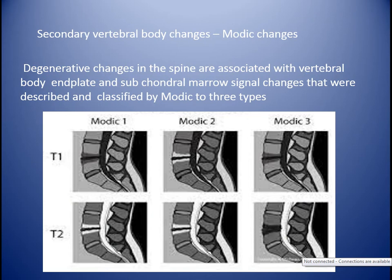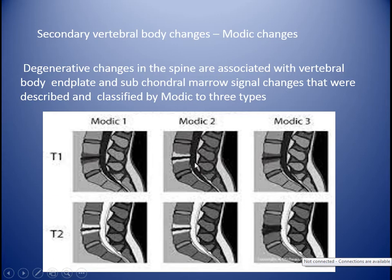Modic changes are degenerative changes in the spine associated with vertebral body end plate and subchondral marrow signal changes, classified by Modic into three types. Type 1: hypointense on T1, hyperintense on T2, indicating inflammatory change and edema — these are the active symptomatic changes associated with low back pain. Type 2: hyperintense on T1 and T2, indicating marrow replacement due to marrow ischemia. Type 3: low signal in both T1 and T2, indicating sclerosis — not typically associated with active symptoms.